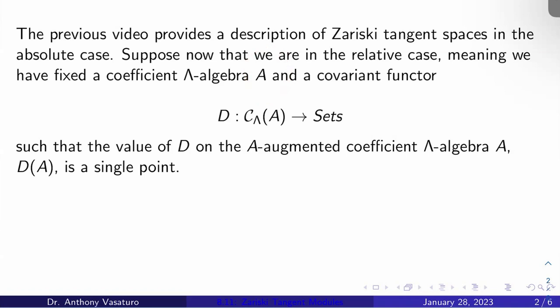And a covariant functor D from C_Λ(A) to Sets, such that the value of D on the A-augmented coefficient Λ-algebra A itself, in other words D(A), is just a single point. Because remember in the last video, D(k) was a single point, and that was sort of a defining property of Zariski tangent spaces.